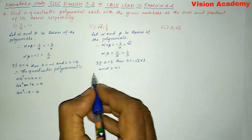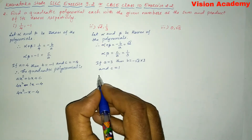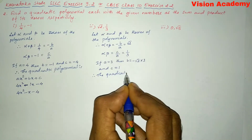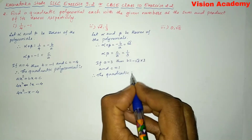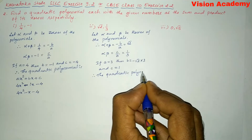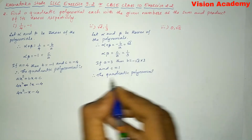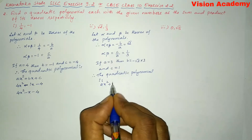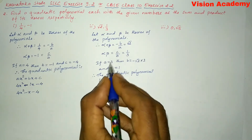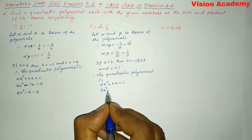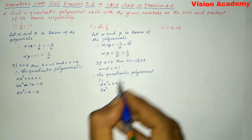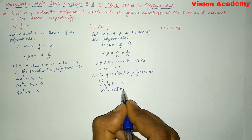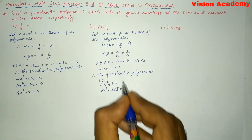Therefore, the quadratic polynomial is — general form AX squared plus BX plus C. A is three, so three X squared; B is minus three square root of two, so minus three square root of two times X; and C is one, so plus one.